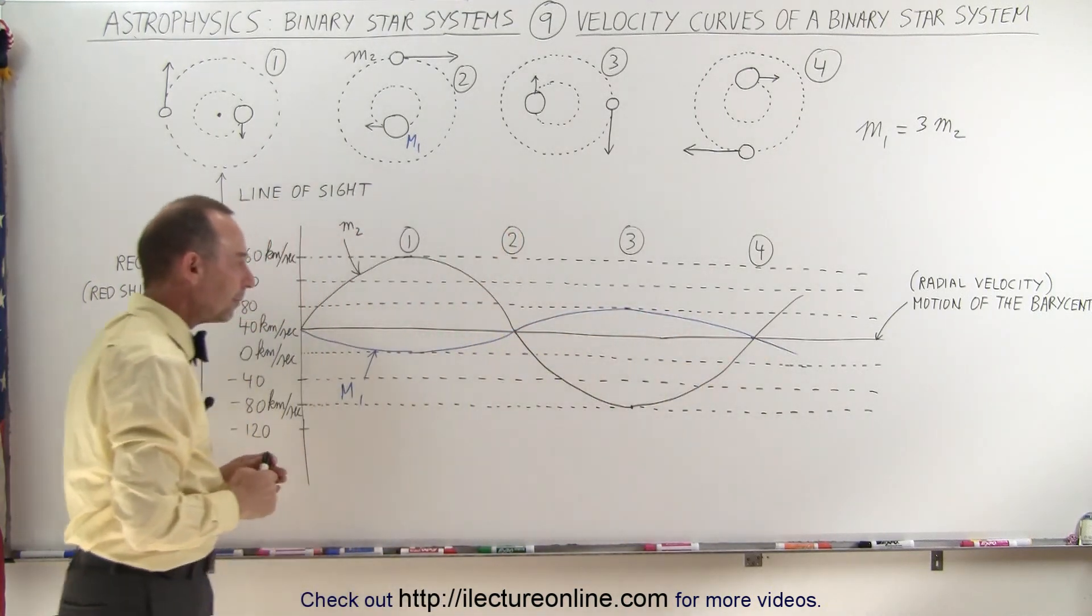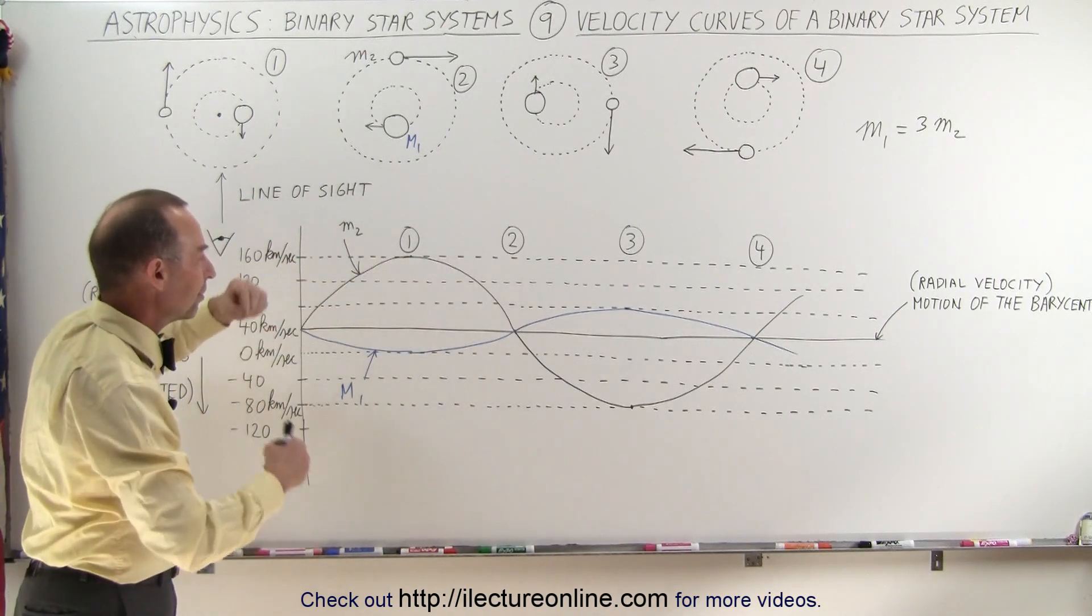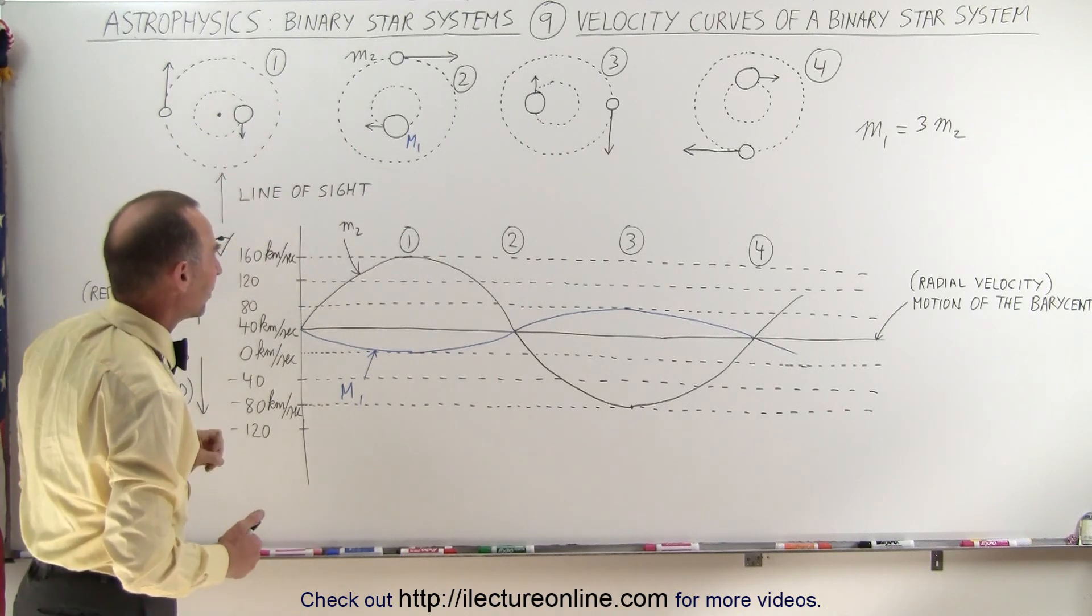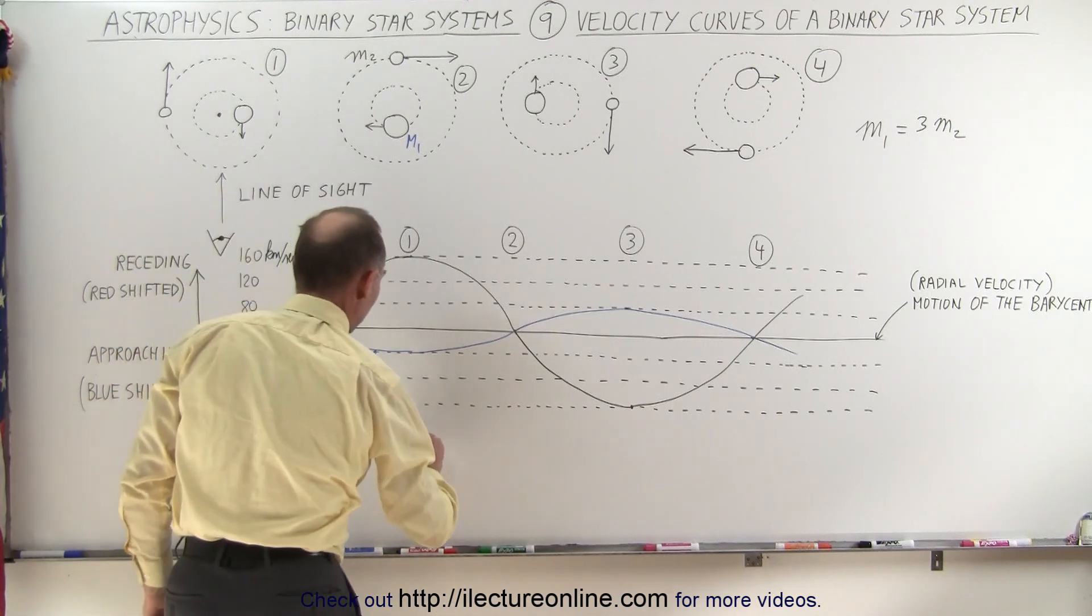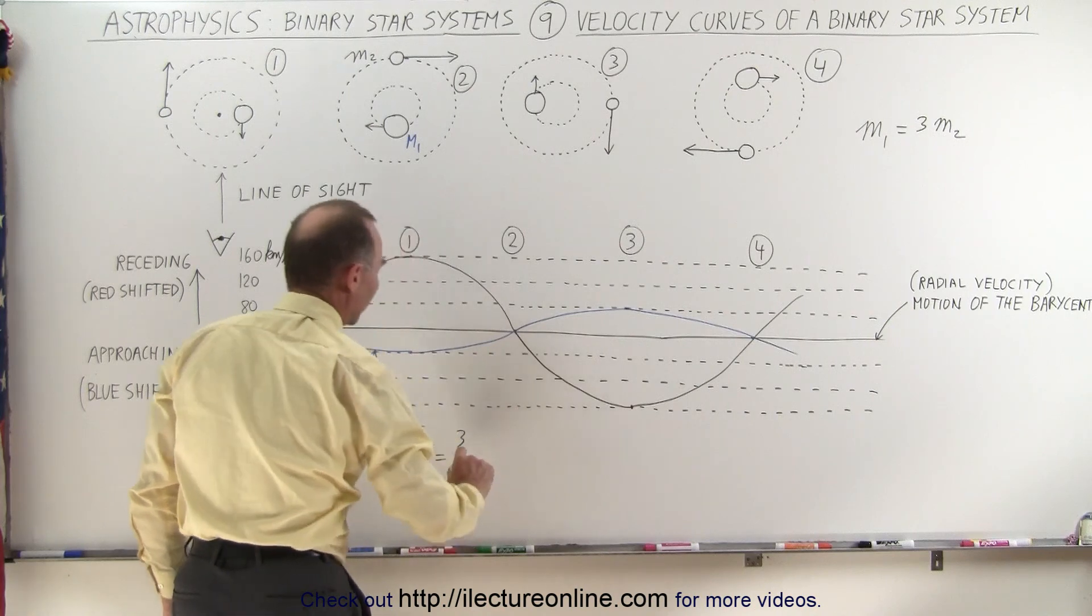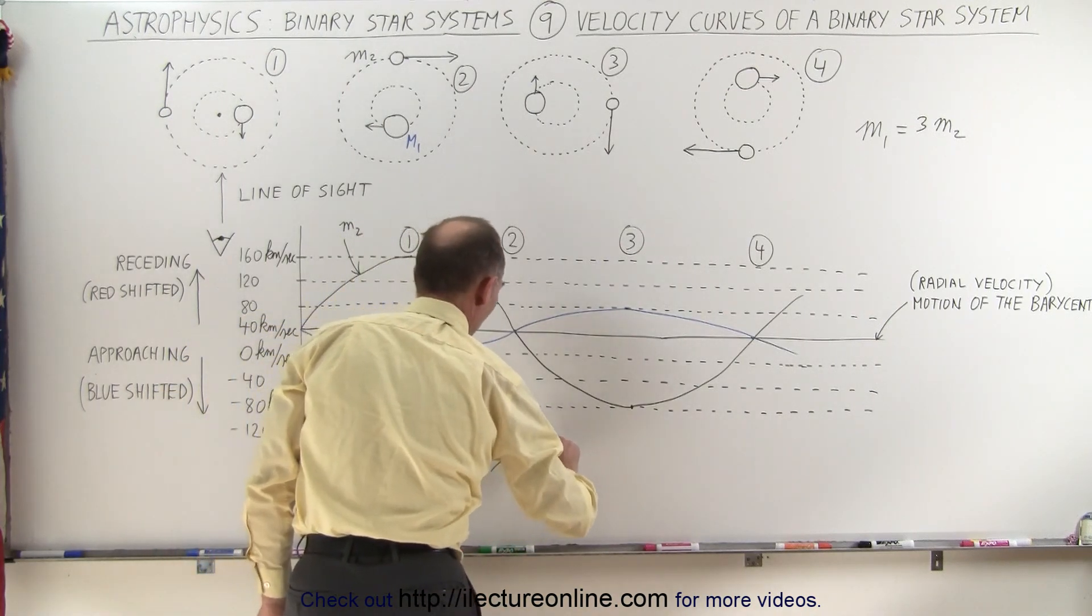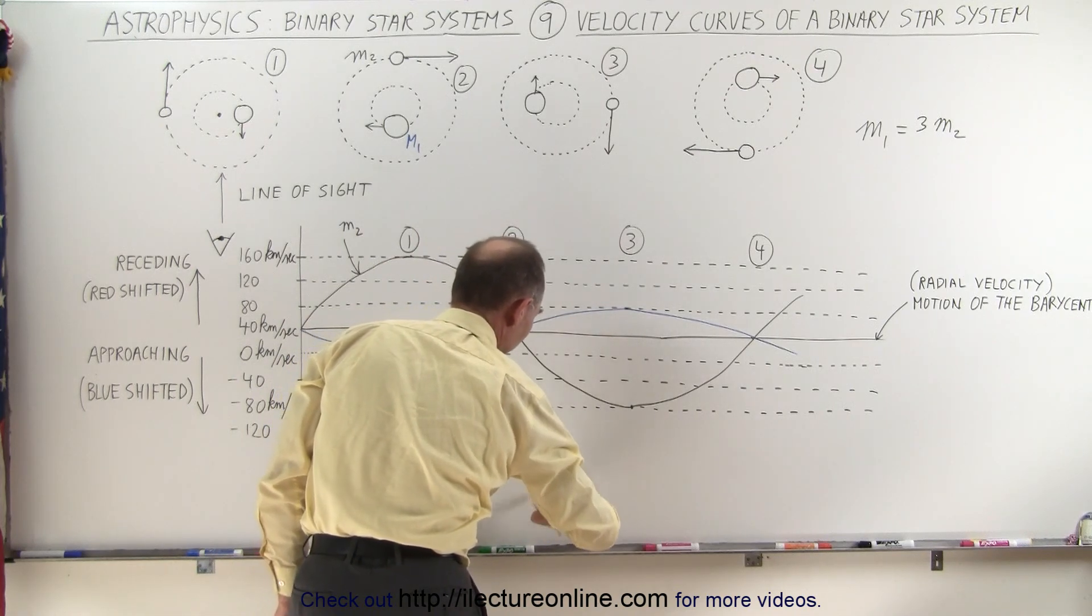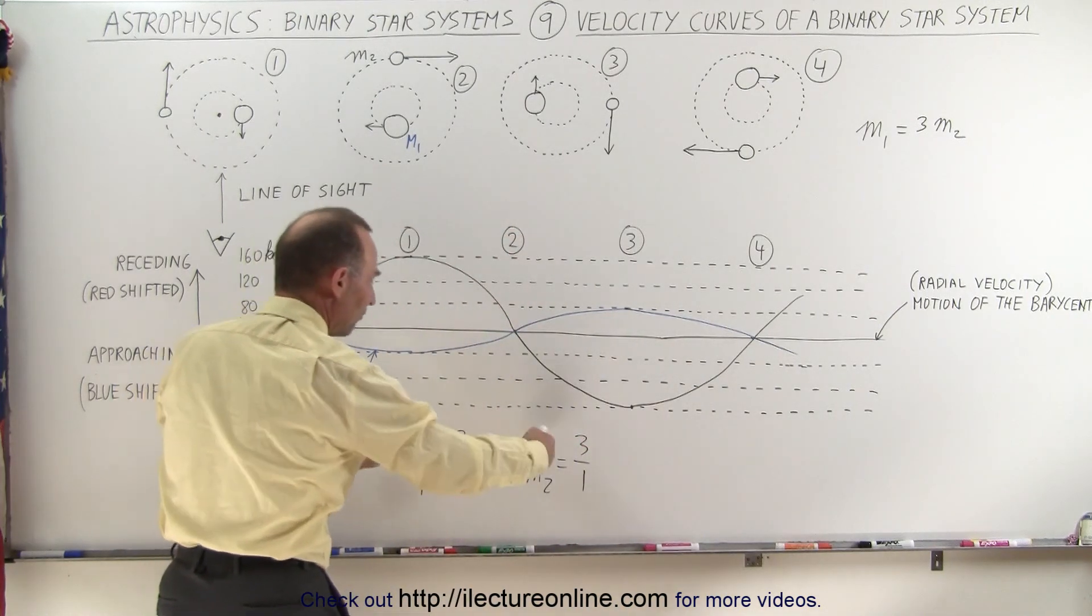So you can see here clearly that the ratio of the velocities, which can be detected if we have that nice line of sight on that particular binary system, we can then conclude if the velocity, if V2 over V1 is equal to 3 to 1, that means that the mass ratio, that M1 divided by M2, must therefore also be 3 to 1, so that means there is an inverse relationship.